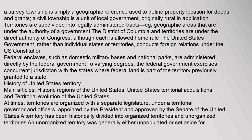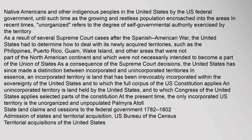At times, territories are organized with a separate legislature, under a territorial governor and officers appointed by the president and approved by the Senate of the United States. A territory has been historically divided into organized territories and unorganized territories. An unorganized territory was generally either unpopulated or set aside for Native Americans and other indigenous peoples by the U.S. federal government, until the growing population encroached into those areas. After the Spanish-American War, the United States had to determine how to deal with its newly acquired territories, such as the Philippines, Puerto Rico, Guam, Wake Island, and other areas that were not part of the North American continent and were not necessarily intended to become part of the Union of States.